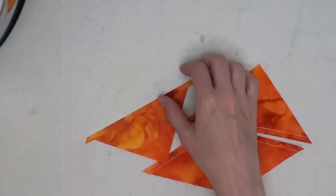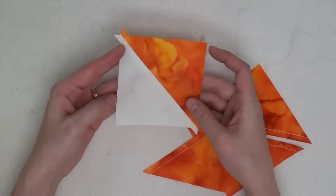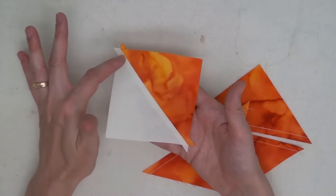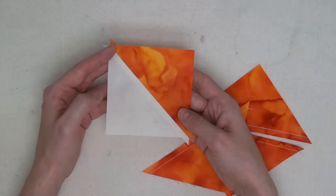So you're going to end up with four half square triangles. Make sure to refer to your pattern to know what size to trim these triangles down to so it'll work for our block.